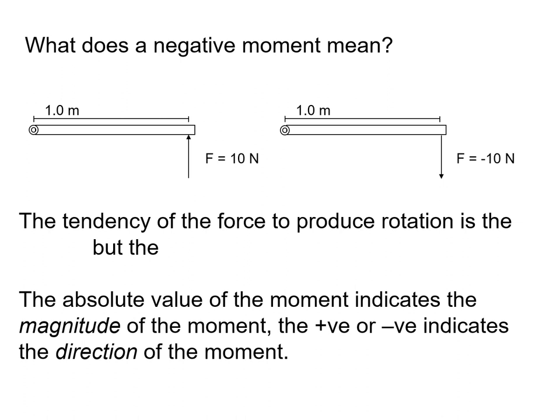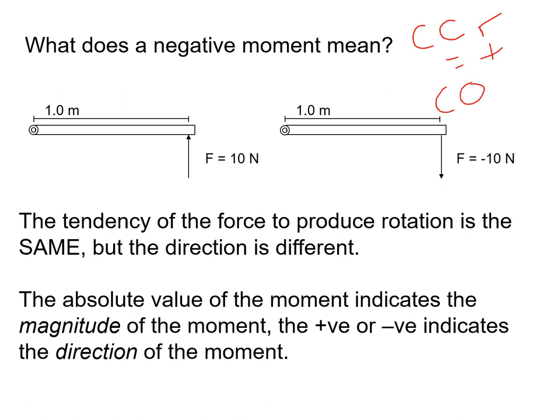Moments can be positive or negative. A negative moment and a positive moment have the same magnitude of force but different directions. As with angular kinematics, counterclockwise rotation is positive and clockwise rotation is negative. The absolute value of a moment indicates its magnitude; the plus or minus sign indicates the direction of rotation.